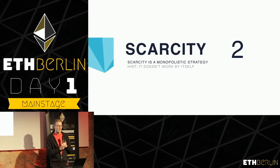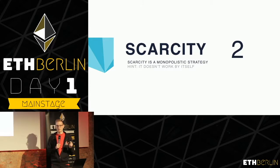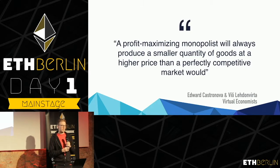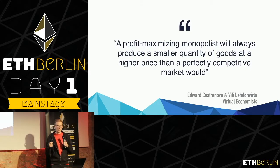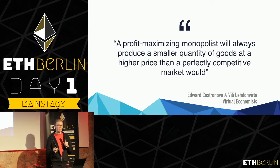The first strategy for NFTs thus far has been designing scarcity or collectibles. This is a monopolistic strategy. When a monopolist enters a market and is profit-seeking, they will always produce a smaller quantity of goods — meaning artificial scarcity — at a higher price than a perfectly competitive market would.